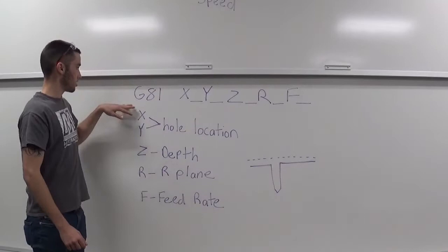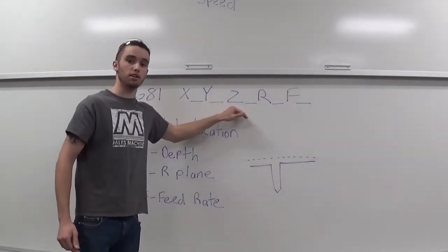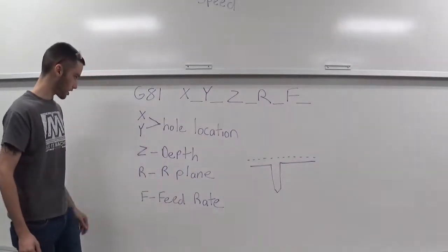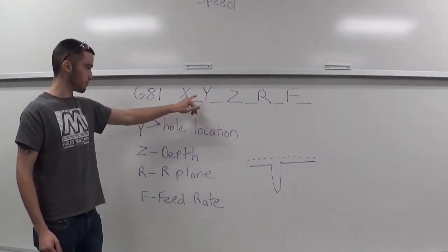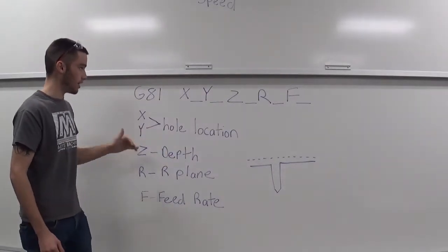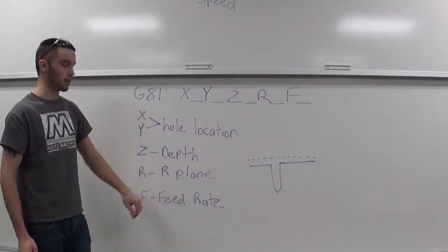This is what a G81 would look like. You've got your X, your Y, your Z, your R, and your F. The X and your Y, that is your hole location. Your Z, that's going to be the depth of the hole. Your R, that's your R-plane.